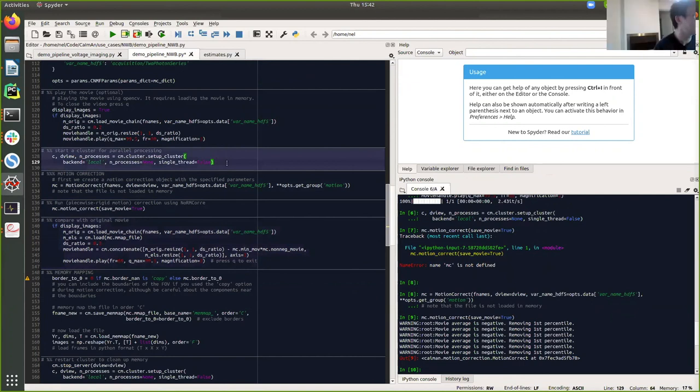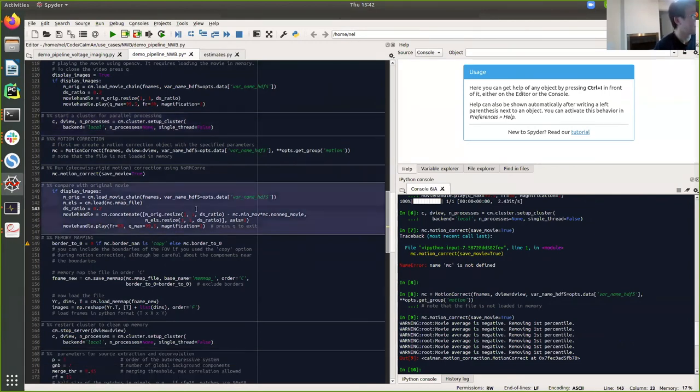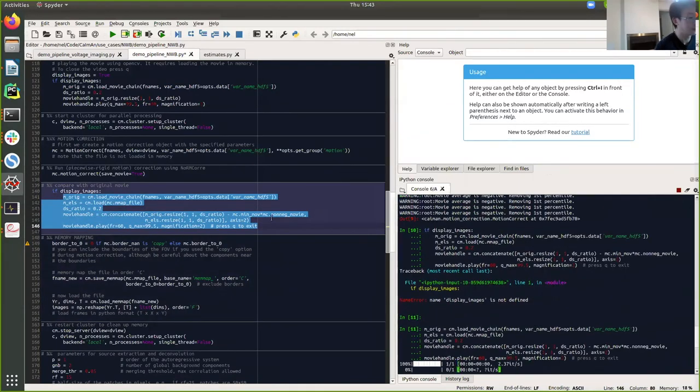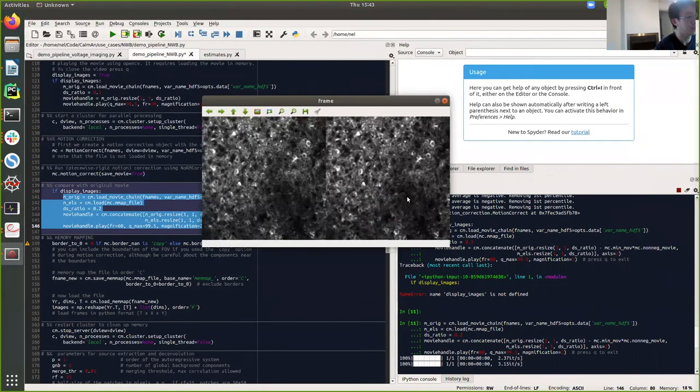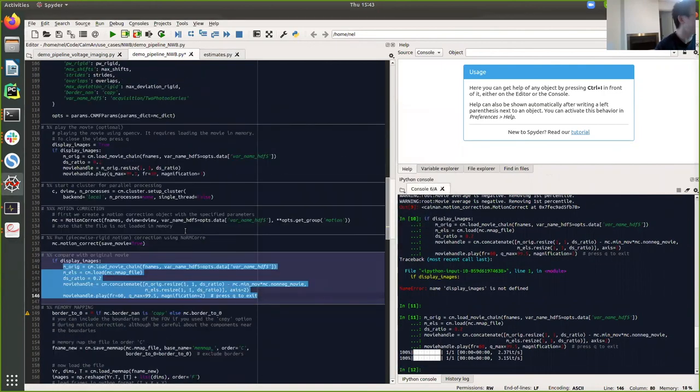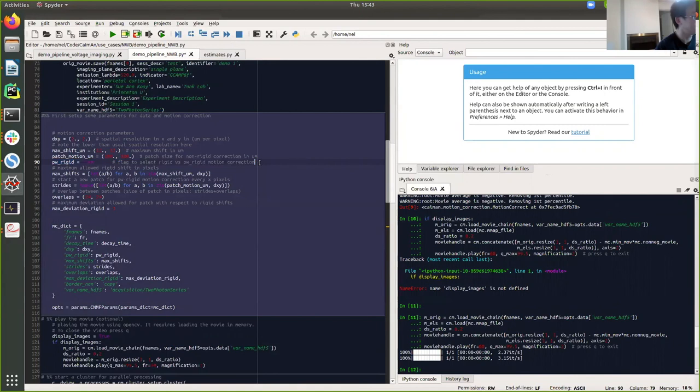The movie itself is pretty small, so it won't take much time. So the parallelization step is the step. We set up a cluster and we can define how many processes we want to use. And if you select end processes to be none, that means you use number of your CPU minus one. So if I have 16 cores, then we use 15 for doing parallelization. So here we want to see the result of motion correction. The left is the raw movie and the right is the movie after motion correction.